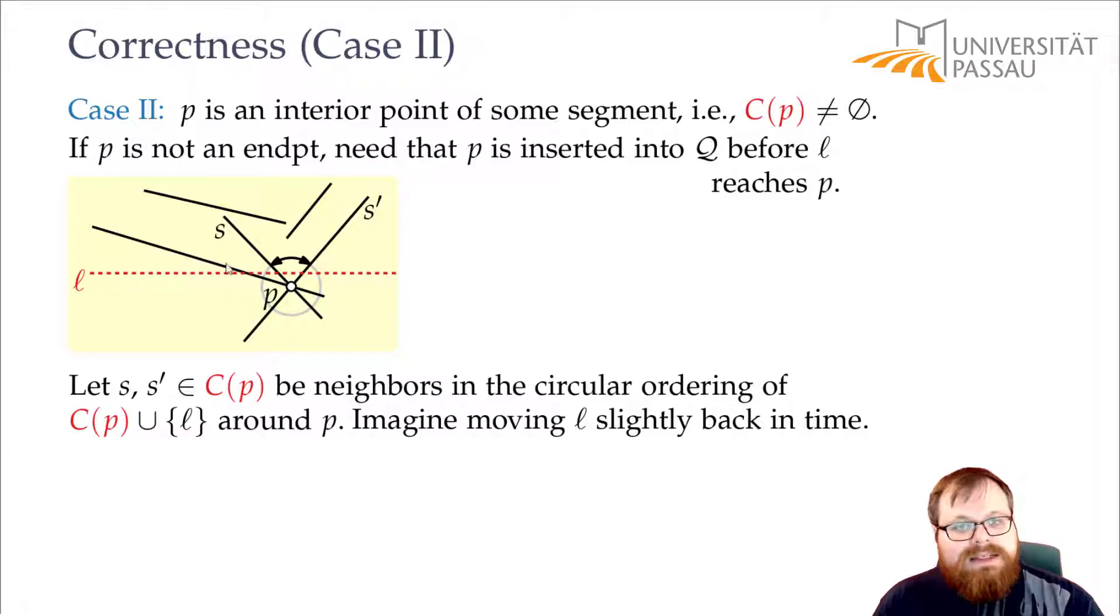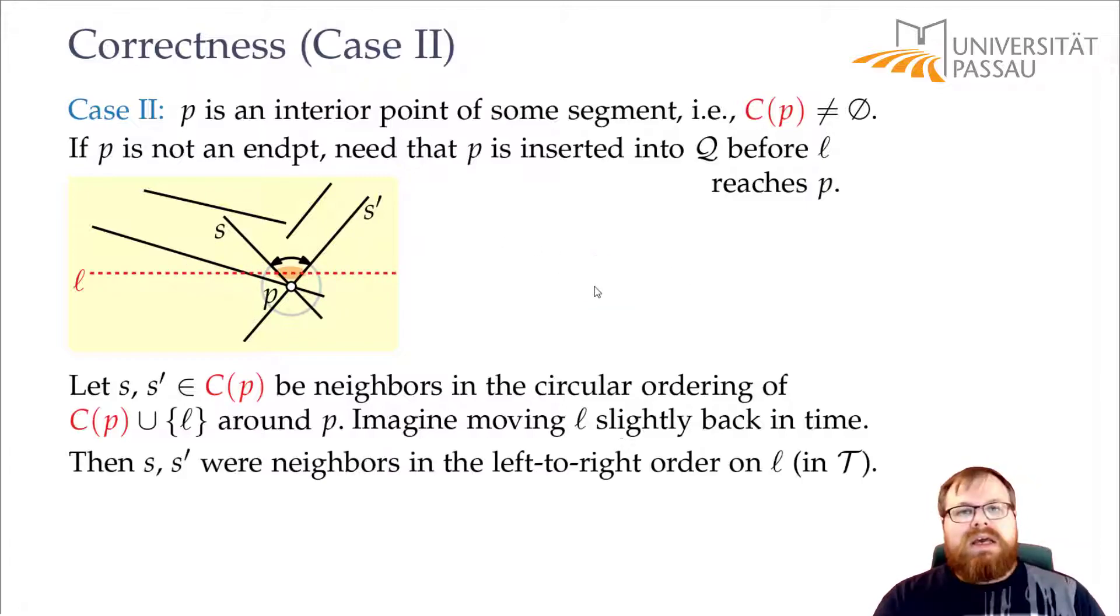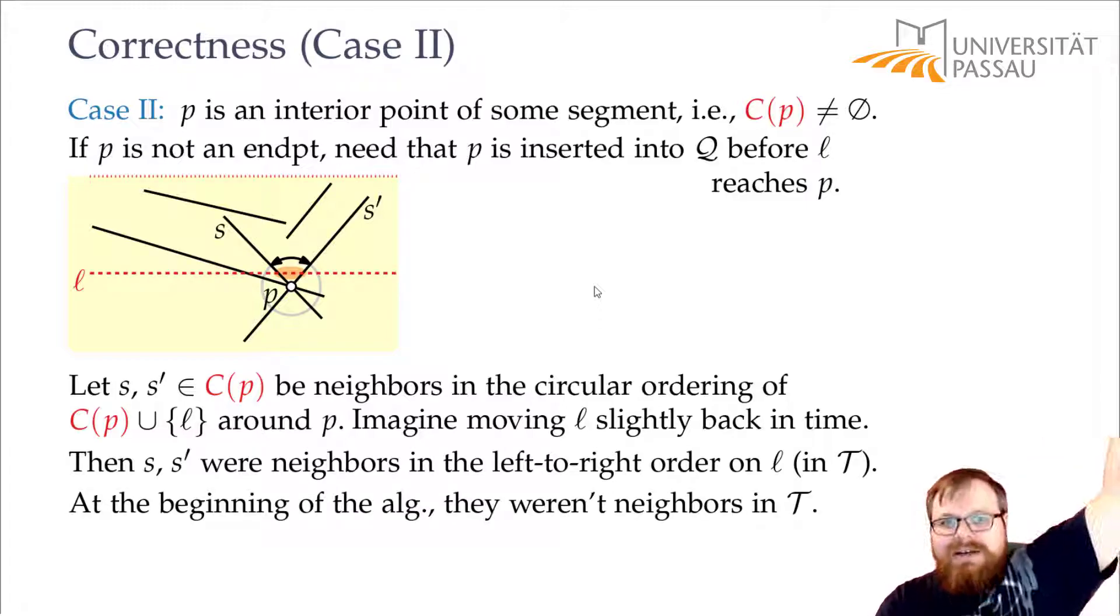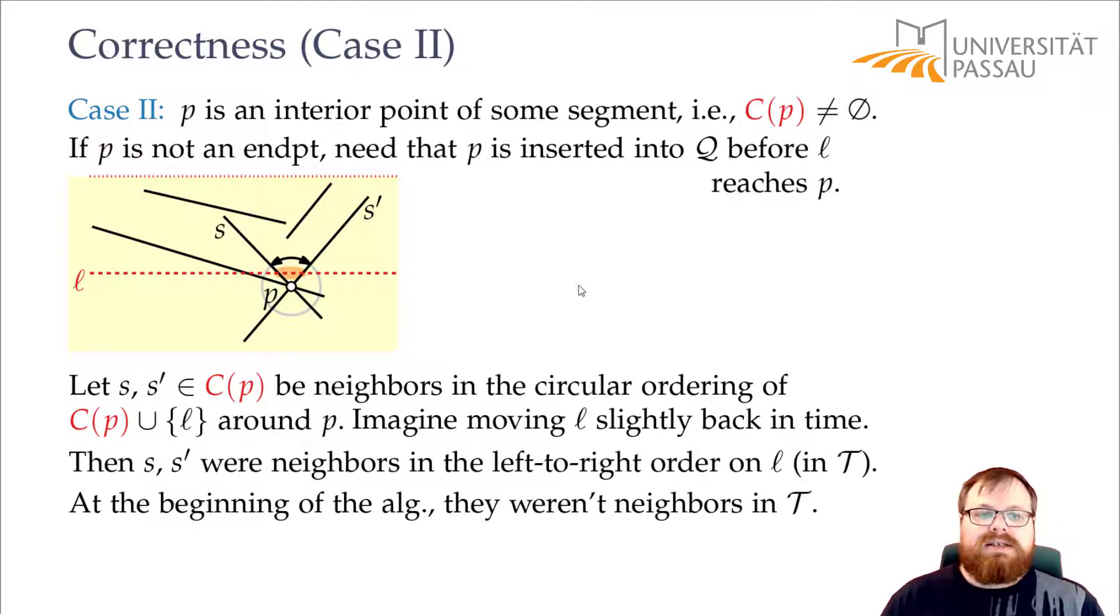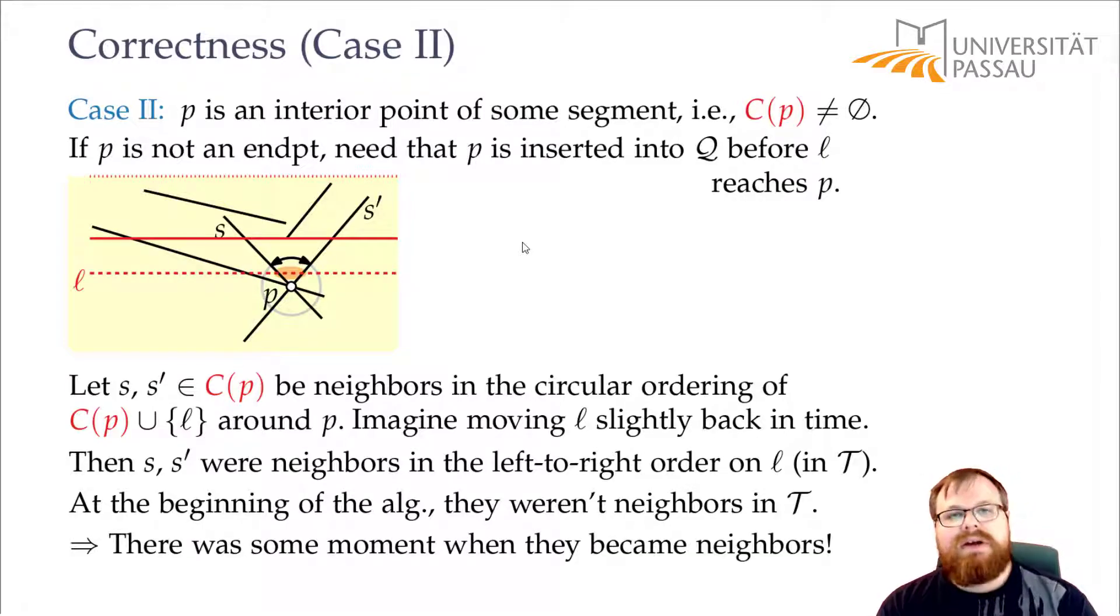In the sweep line status at this point, S and S' are neighbors. If we go back to the very beginning of the algorithm, then there was no segment in the sweep line status. So clearly S and S' were not neighbors there. That means there has been some point in our algorithm where S and S' become neighbors.